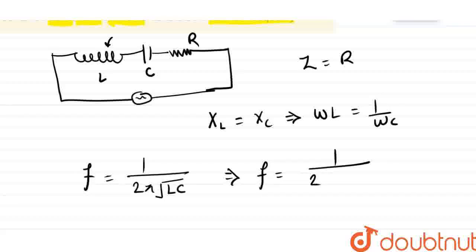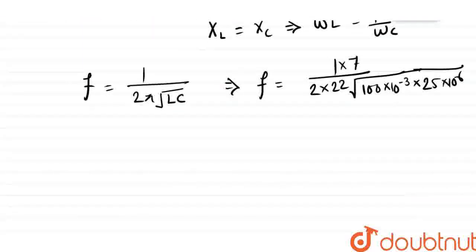1 by 2 and pi is 22 by 7, and under root, this L is 100 mH - milli is 10 to power minus 3 - into 25 microfarad. Now we'll substitute these values and see what we get.